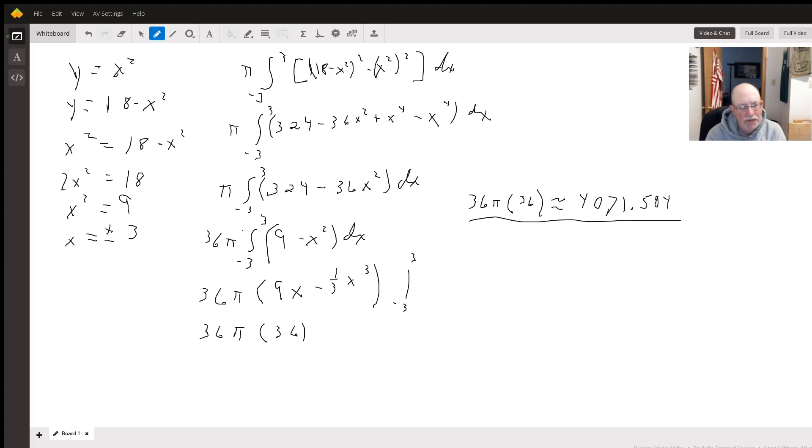So our bounds are going to be negative 3 and 3 on our integral. So for the integral, for a washer method, we use pi times the integral of 18 minus x squared minus x squared. So we get the integral of pi times negative 3 to 3 of 18 minus x squared squared minus x squared squared dx.